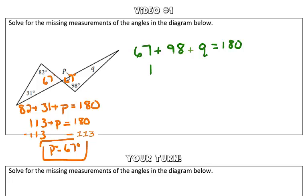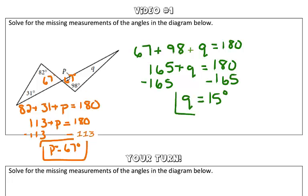Combining our like terms, we get 165 plus the measure of angle Q is equal to 180 degrees. Using inverse operations, we're going to subtract 165 from both sides. So we get Q is equal to 15 degrees. Nice work!